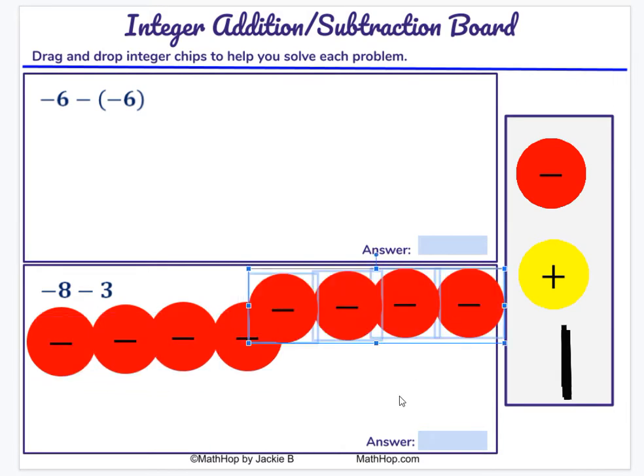Now I have eight negative chips on the board, and it says I'm going to take away three chips, but not three negative chips. This is negative six, take away negative six. This is negative eight, take away three. So I need to take away three positive chips.